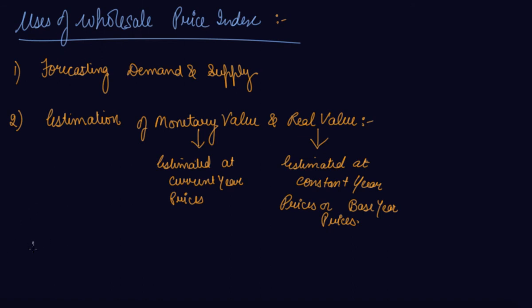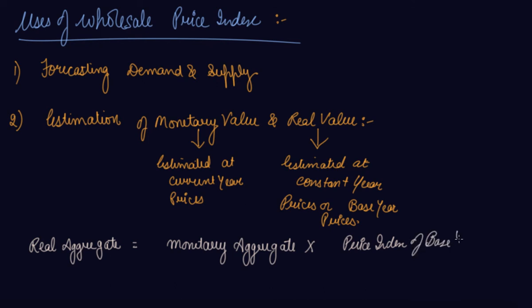You can get the monetary value, and then find out the real aggregates. Real value equals monetary value multiplied by price index of base year divided by price index of current year. In this way, it helps to find out the monetary value and real value.